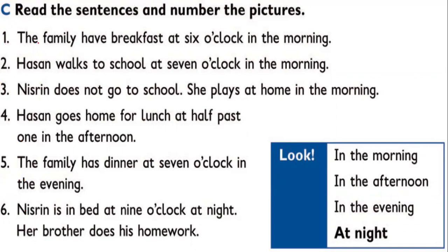Number one: the family have breakfast at six o'clock in the morning. Hassan walks to school at seven o'clock in the morning. Misrim doesn't go to school — she plays at home in the morning. Hassan goes home for lunch at half past one in the afternoon. The family has dinner at seven o'clock in the evening. Misrim is in bed at nine o'clock at night. Her brother does his homework.